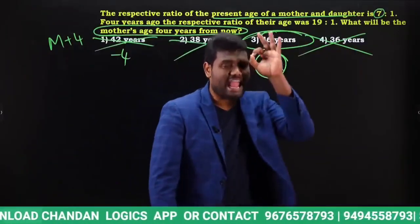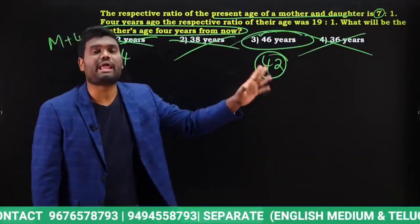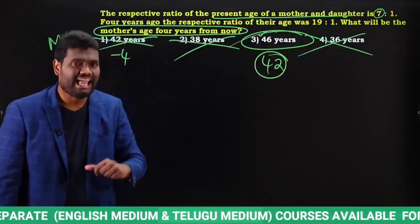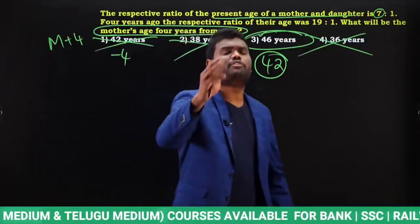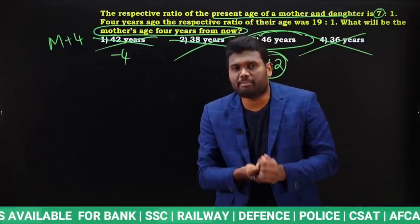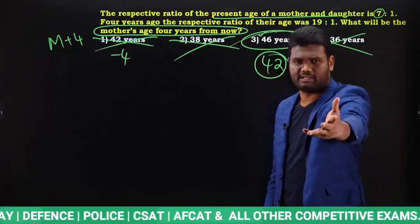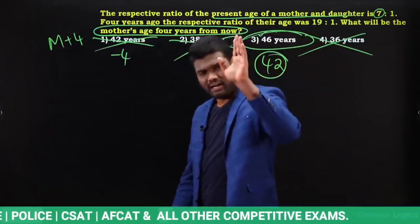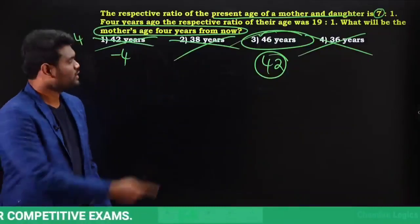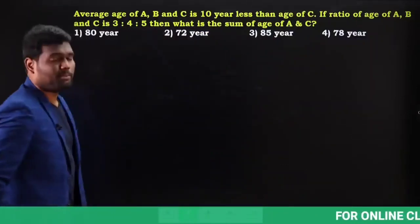These are the exact questions that came in examination. Many students think the options are framed to be multiples, but these are real exam questions. If you open the book, you can try these questions yourself. About 95% of age-related questions can be solved just by looking at the question itself. The answer for this question is 46 years — very simple.